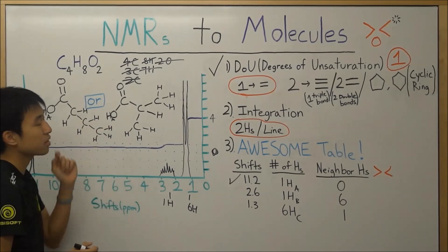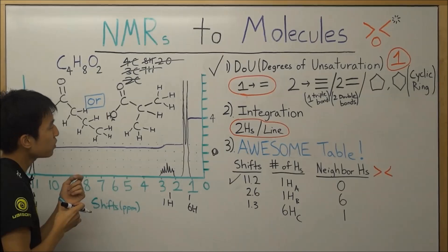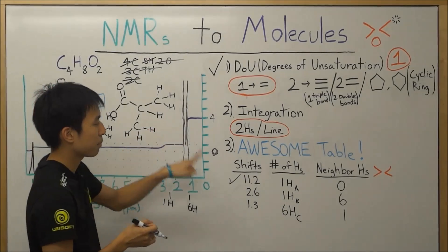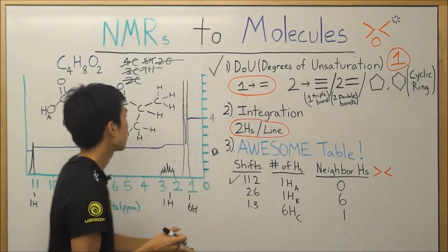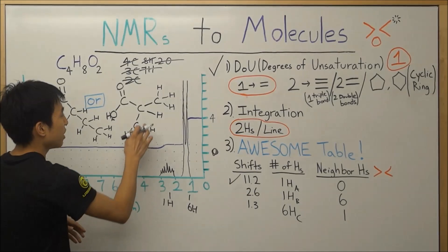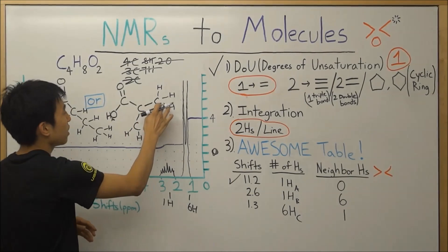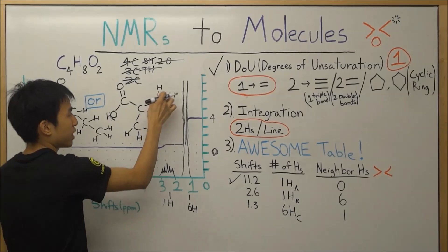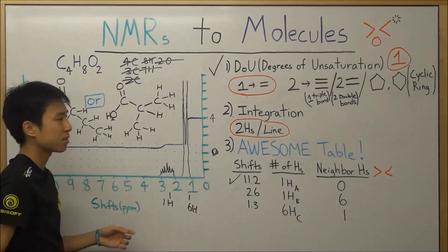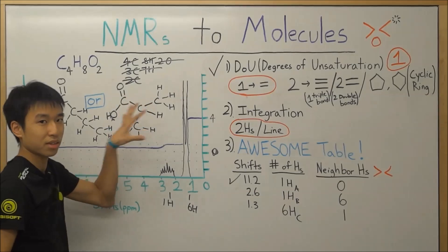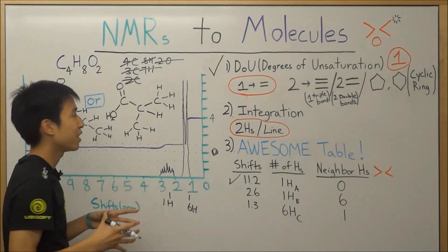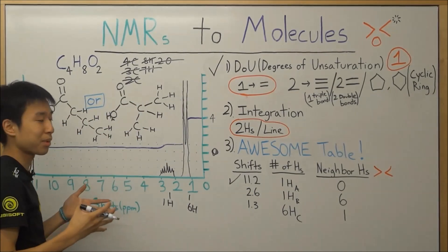But if you take a look at this molecule, we do have a hydrogen here that's being split by six neighbors that are within three bonds distance. One bond, two bond, three bond, and one bond, two bond, three bond, yadda yadda yadda, three bonds, one bond, two bond, three bonds. So this molecule here actually fit it a lot better. So chances are this actually is the molecule.